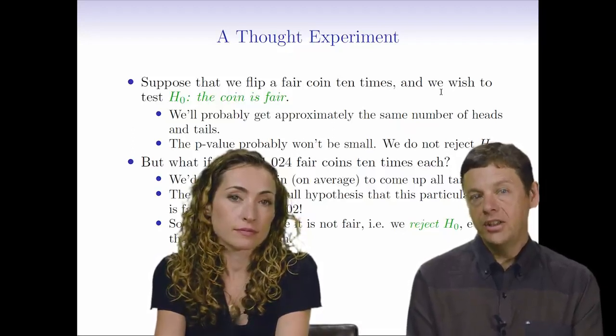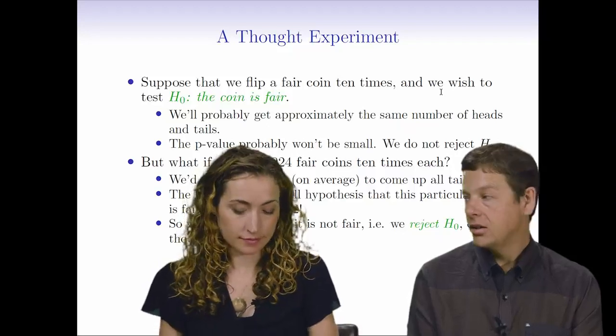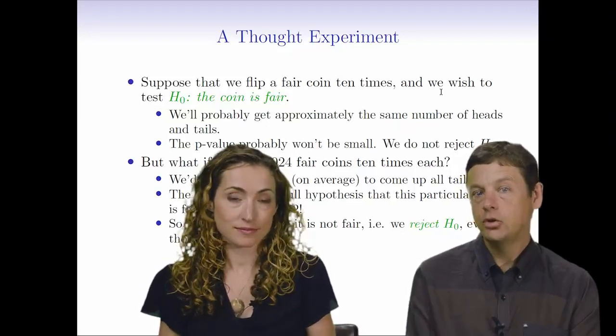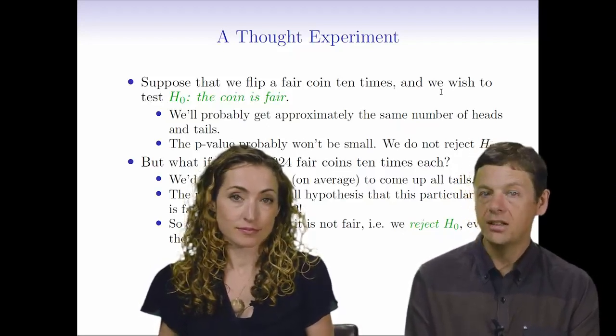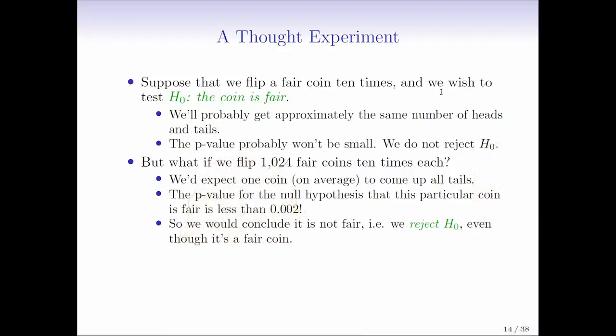So if we were to look at that one particular coin and do the hypothesis test on that coin, it's almost certain that we would end up rejecting the null hypothesis. The other coins maybe we don't reject, but the point here is that if we perform enough hypothesis tests, even when we insist on a very small p-value, it's almost certain that we'll make some, in this case, Type I mistakes. This would be a Type I mistake because these coins are in fact fair. The null hypothesis is true. But at least for that particular coin, we've incorrectly rejected it.